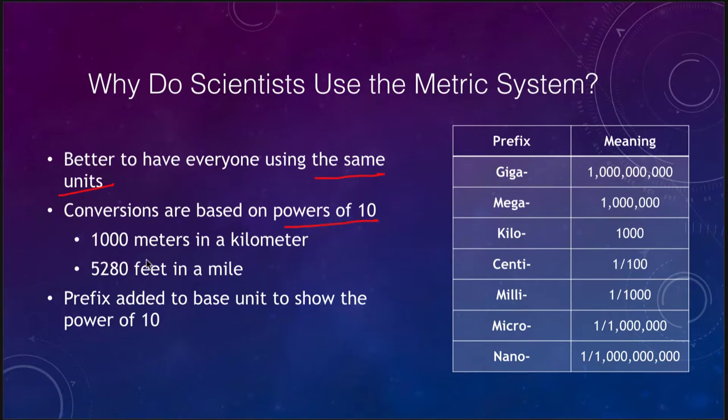They are based on powers of 10. We know that there are 1000 meters in a kilometer, not the English system where there are 5280 feet in a mile. So it's much easier to do conversions, much easier to remember numbers. There are not a whole bunch of conversions to remember. What you really need to know is the table of prefixes, and that tells you what the power of 10 is.